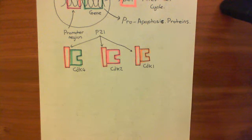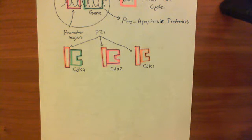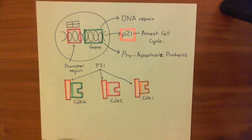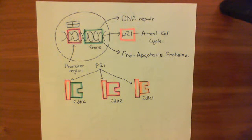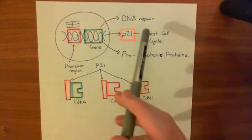Welcome to this next video on P53 and the response to DNA damage. So far, what we've seen is that if the DNA gets damaged in some way, the cell activates the P53 protein, and the P53 protein tetramerizes, translocates into the nucleus, and is then going to activate the expression of a whole bunch of genes — firstly, genes involved in DNA repair.